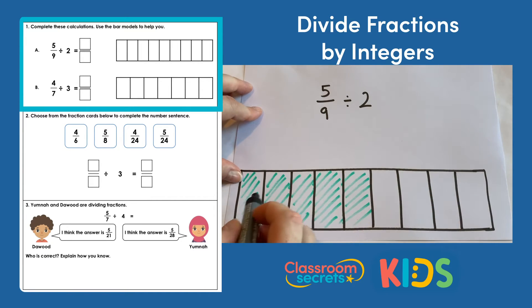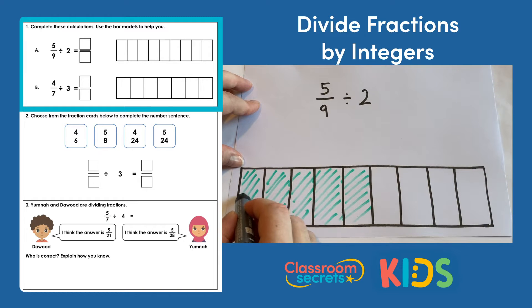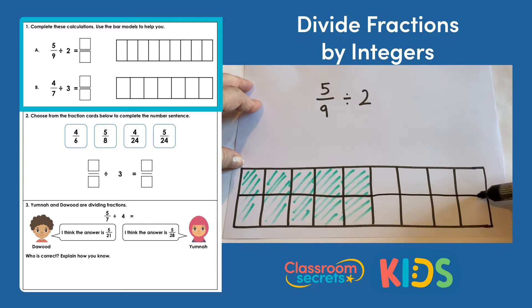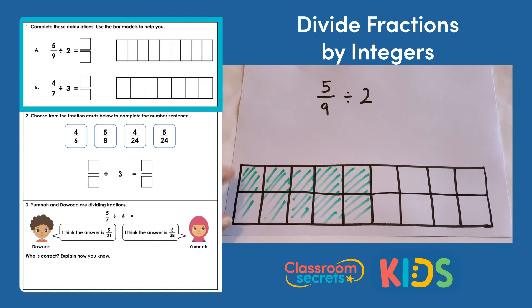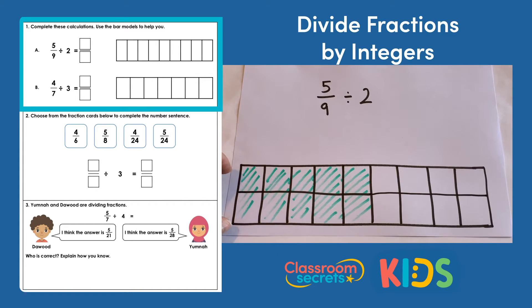So we're talking about 5 of these ninths and we are dividing that by 2. So just so we can see how many equal parts of the whole we'd have, we're going to divide all the ninths into 2. So I'm just going to do that here.